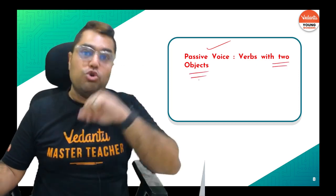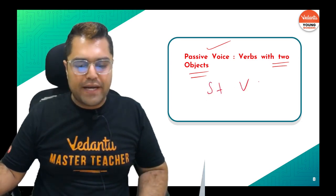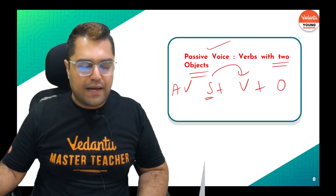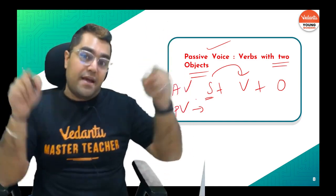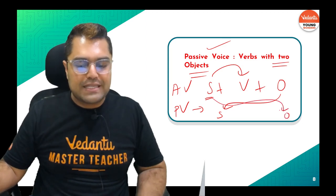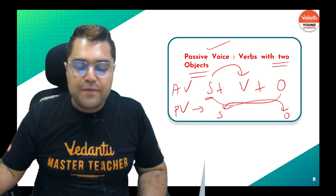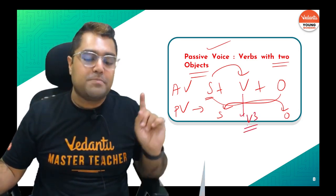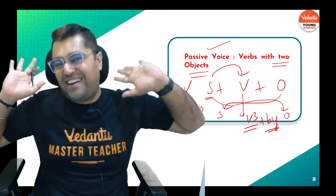In passive voice, what do we do when there are two objects? Remember: a typical sentence has Subject + Verb + Object — that is active voice, because the subject is doing the action. In passive voice, the object becomes the subject and the subject becomes the object. The verb gets V3 (past participle), and 'by' is always added. That's all you need to remember.